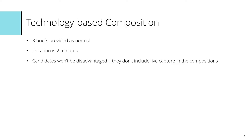Component 2: Technology-Based Composition. Three briefs are provided as normal and you must choose one brief from the three provided. The duration of the Technology-Based Composition is two minutes. You may include live capture in your Technology-Based Compositions, although candidates won't be disadvantaged if it isn't included.